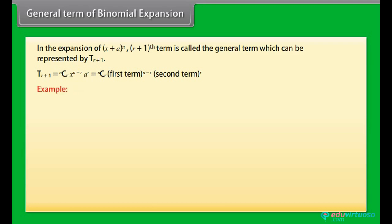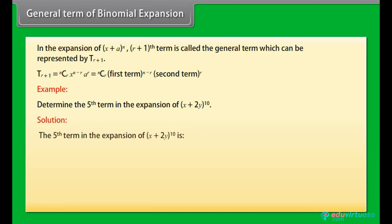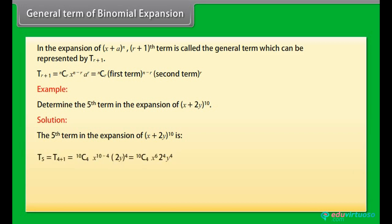Example: Determine the 5th term in the expansion of (x + 2y)¹⁰. Solution: The 5th term in the expansion of (x + 2y)¹⁰ is: 10C4 · x⁶ · (2y)⁴ = 3360 · x⁶ · y⁴.